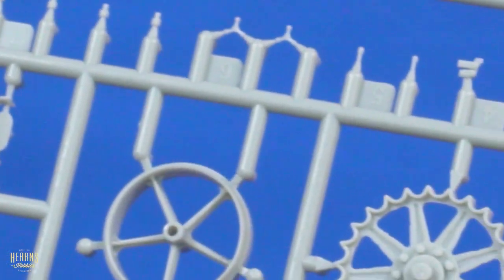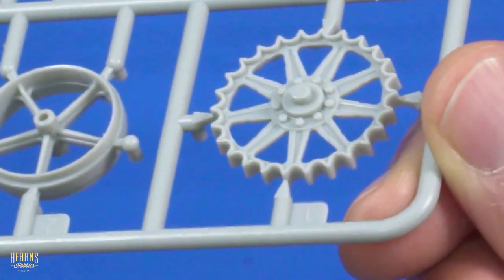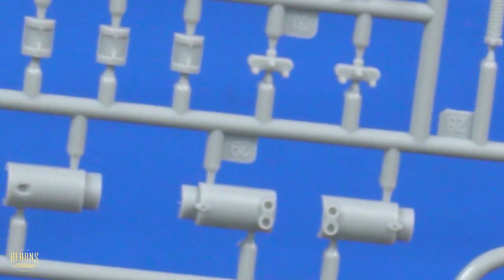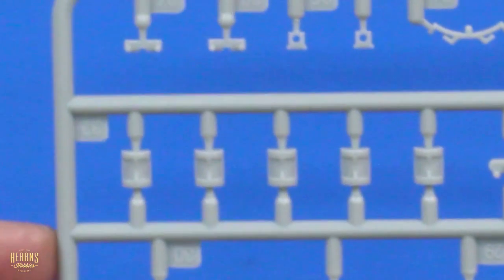They became famous with the Scammel transporter. That's a really complicated kit too. I have been building one of the Indian motorbikes in 35th scale. Superb kit, very complicated for a small motorbike. Those look like cylinders there, don't they? So they're those bits there.